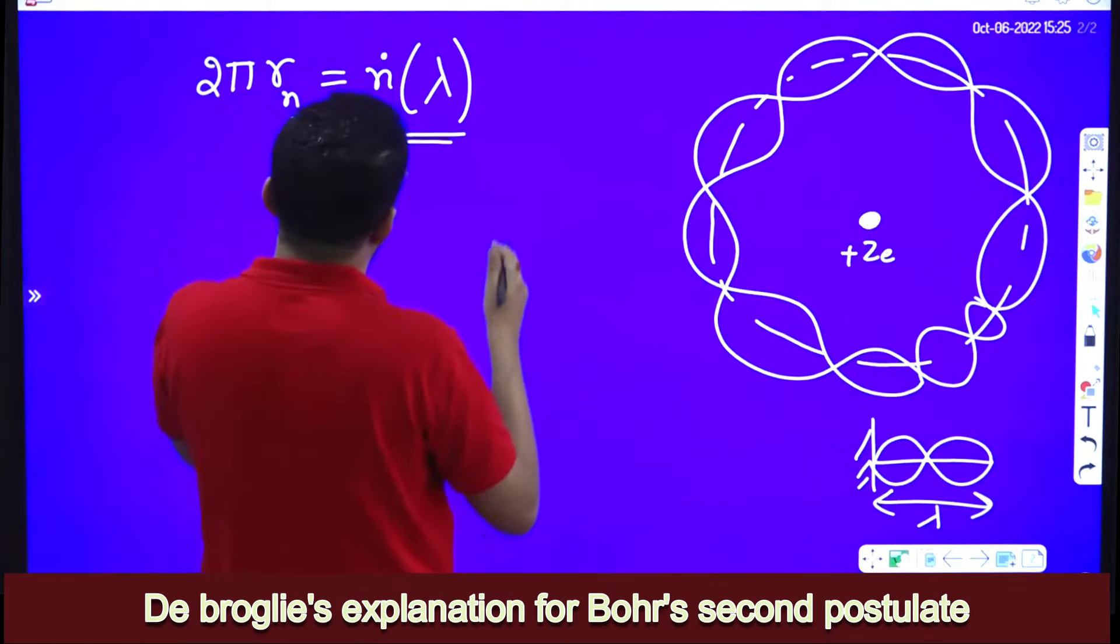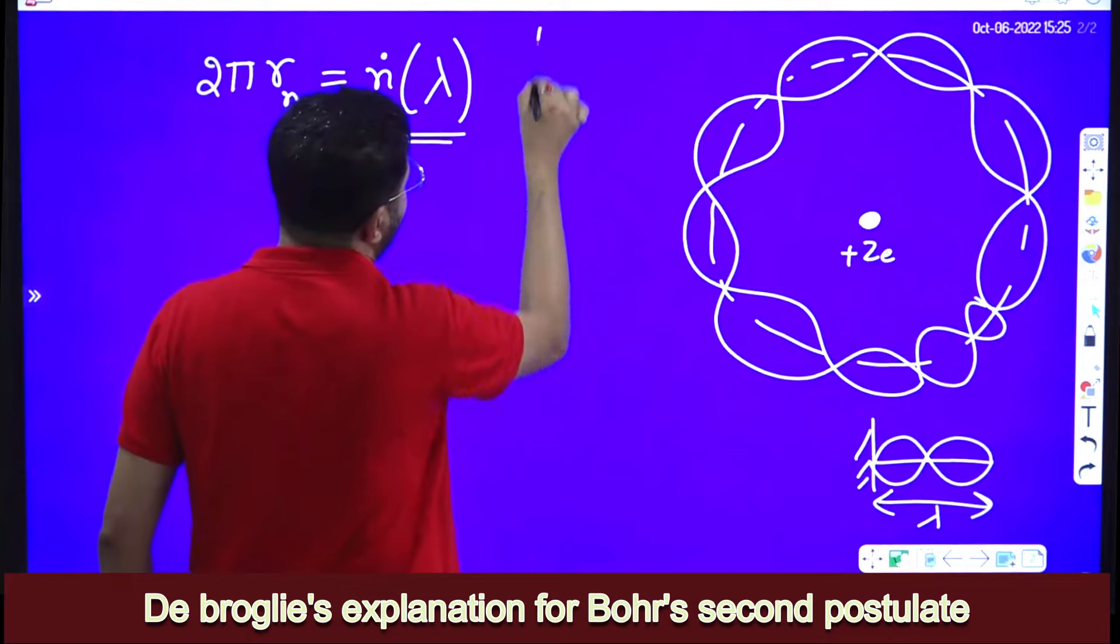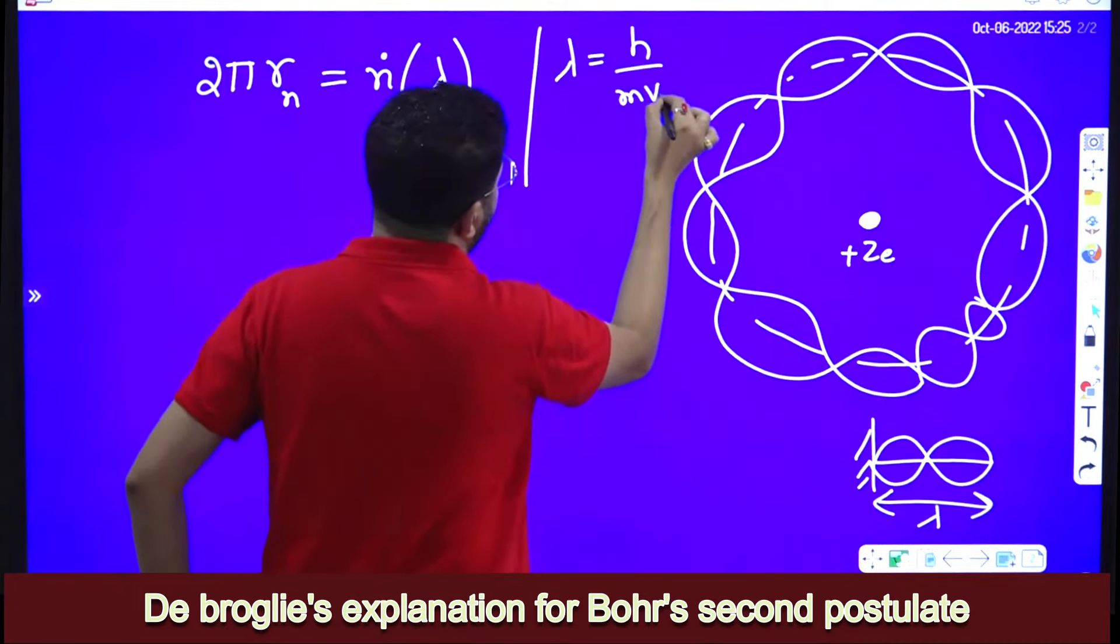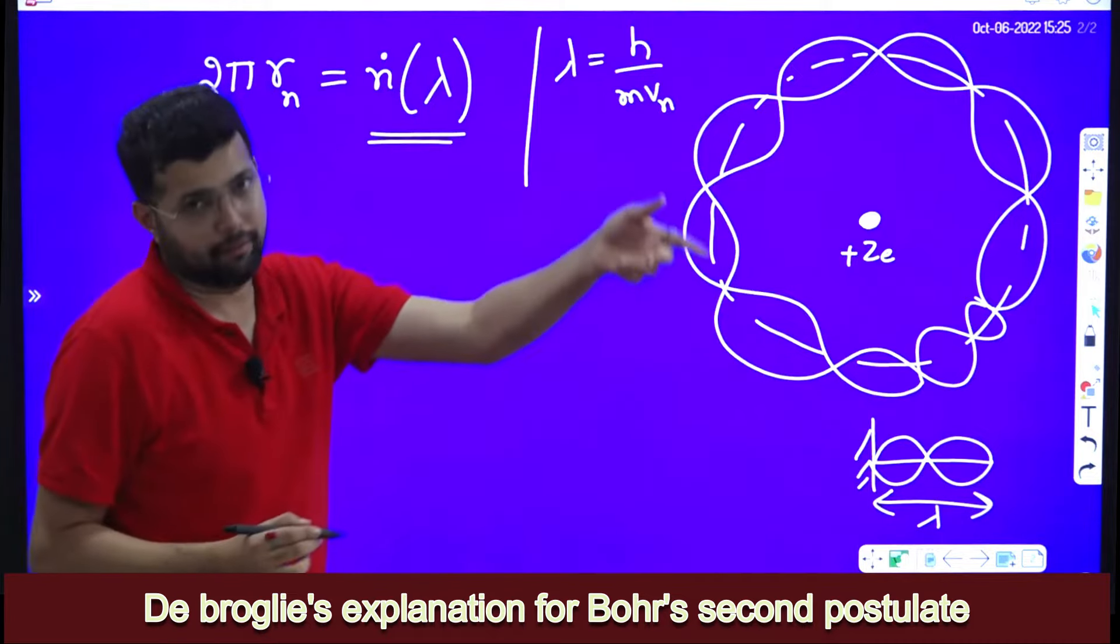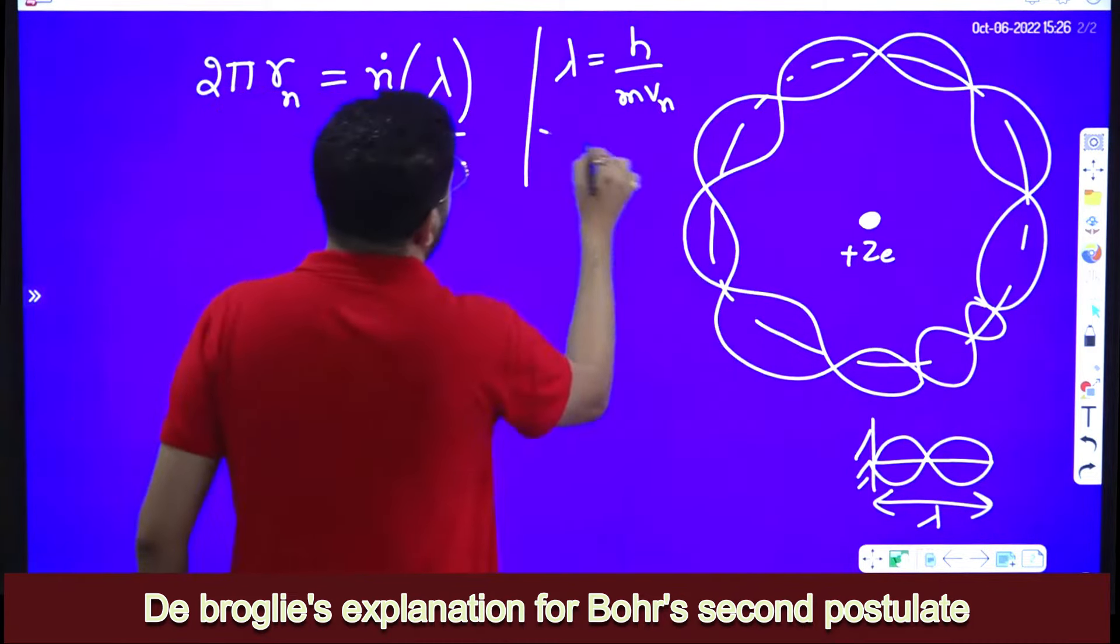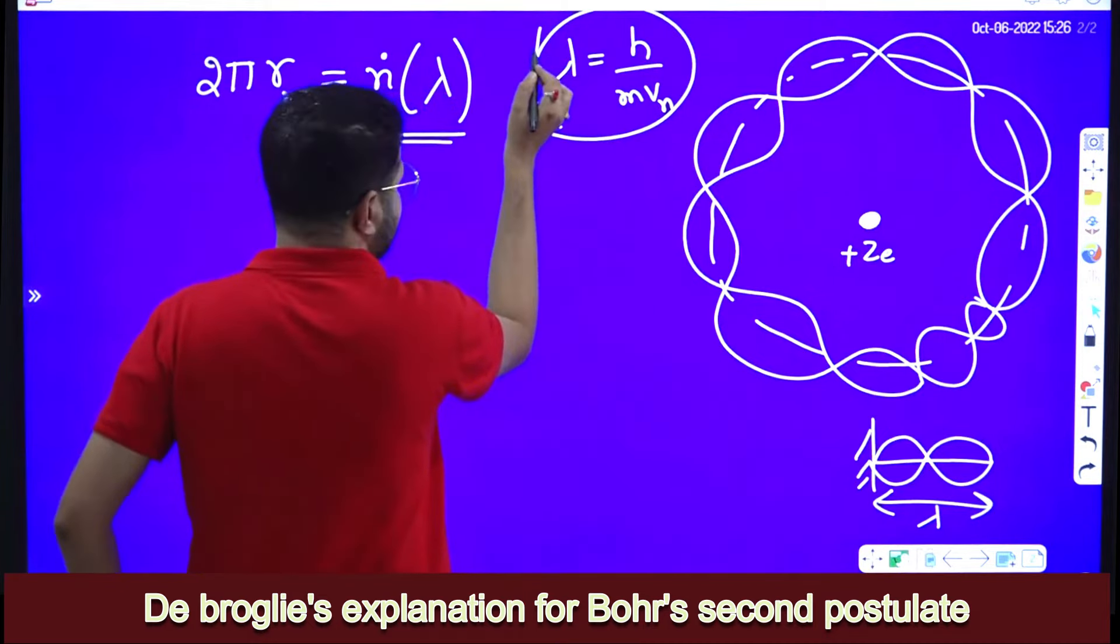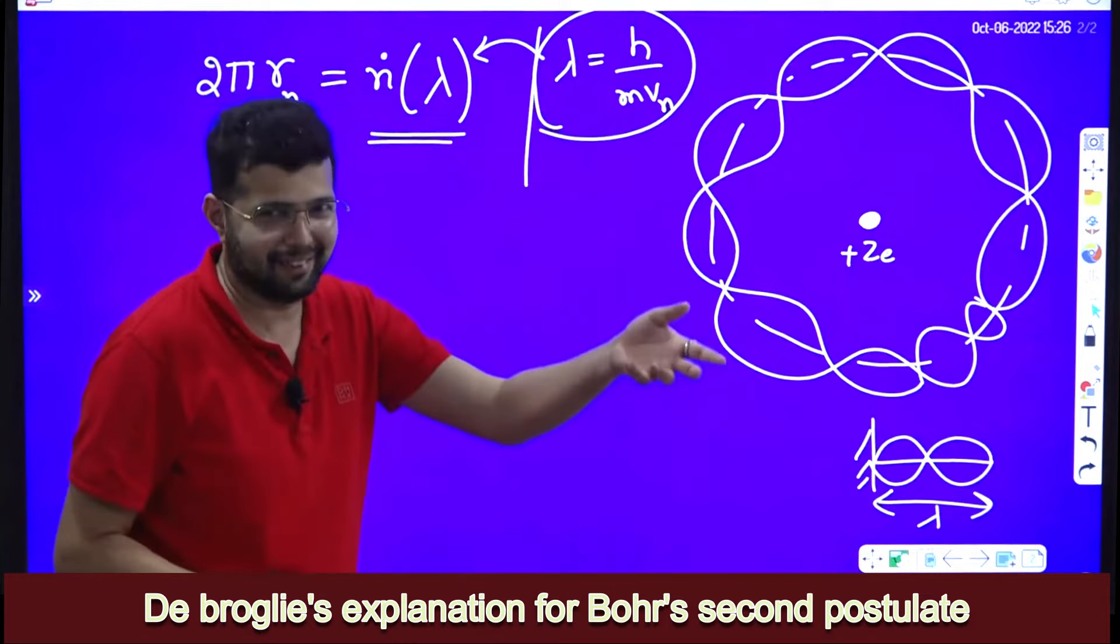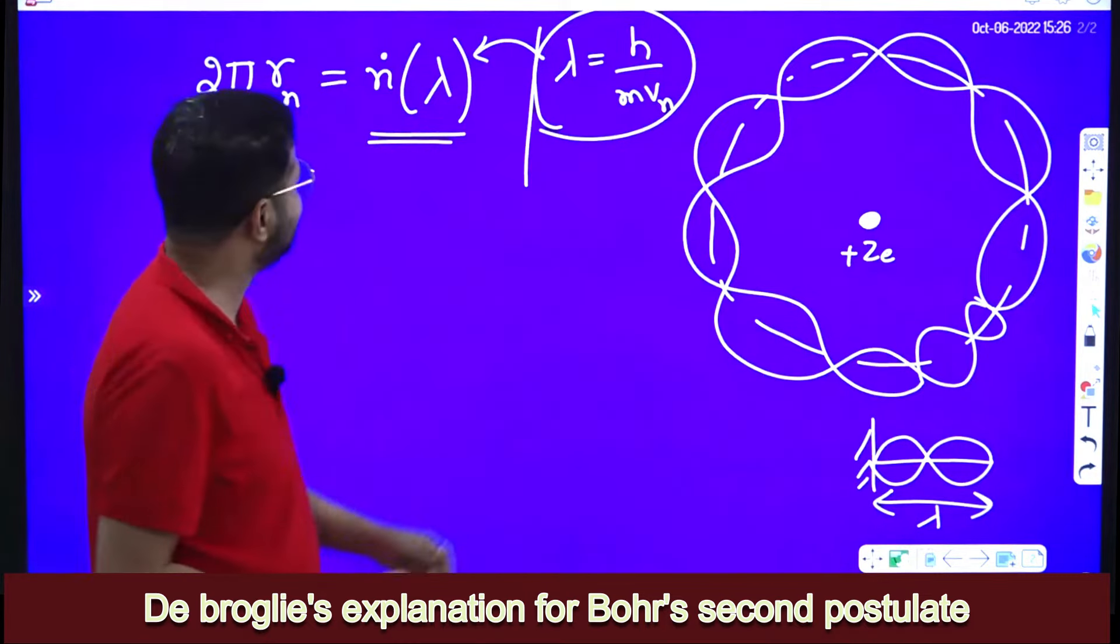Then according to his own theory, de Broglie hypothesis, we know that lambda is equal to h by mv. Here I will write mv_n—v_n stands for velocity of the electron in the nth orbit. What he does? He substitutes the equation for wavelength from his theory. De Broglie is very intelligent.